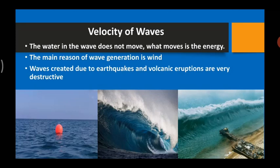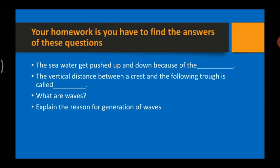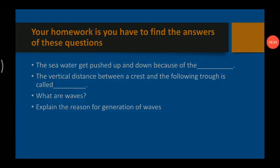That's your homework. The first question: the sea water gets pushed up and down because of the dash. The second: the vertical distance between a crest and the following trough is called dash. The third: what are waves? The last: explain the reason for the generation of waves. That's all — the chapter ends here. We will learn the next chapter in the next video. Thank you for listening, goodbye, take care.